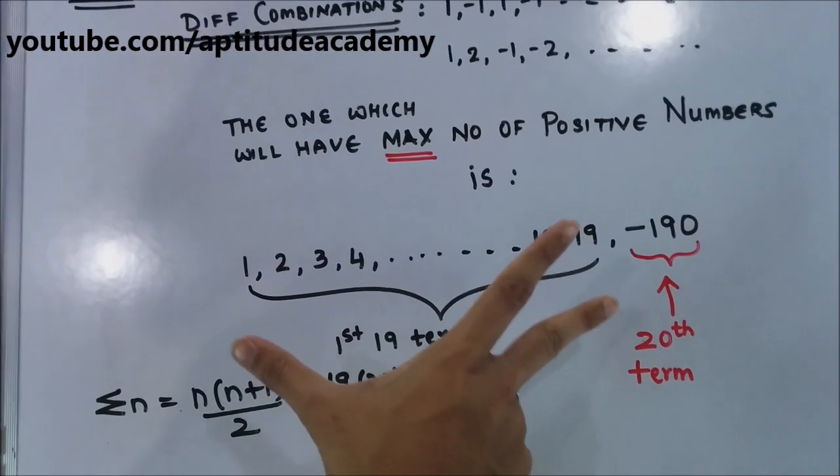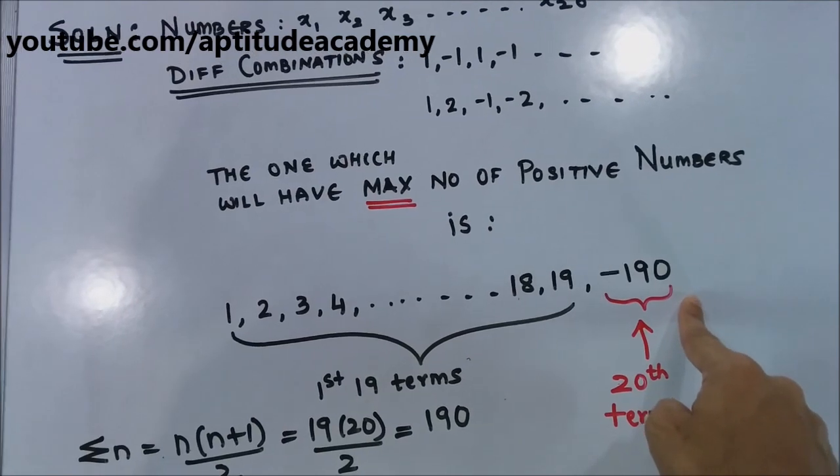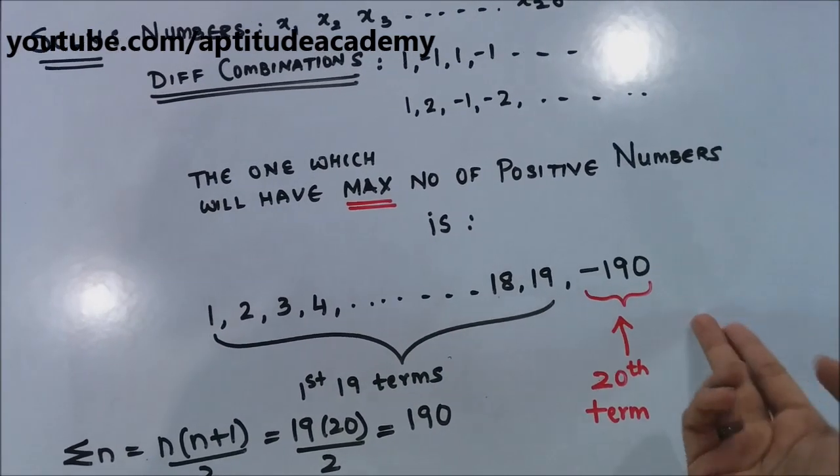So now the sum of these first 19 terms will be 190. So your 20th term can be minus 190. And if you add all of these up, it will come out to be 0.